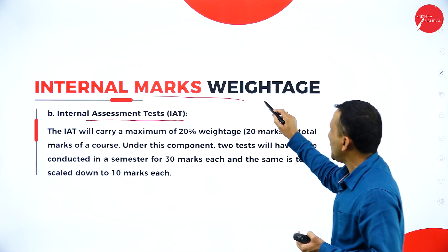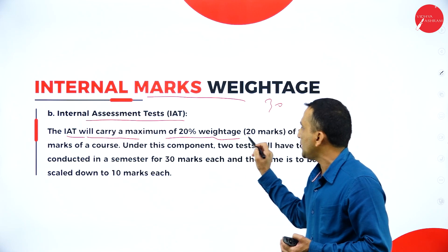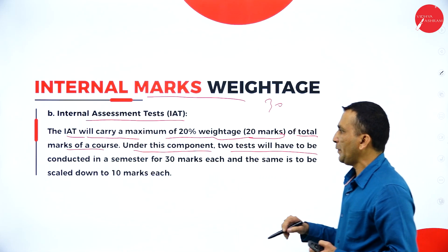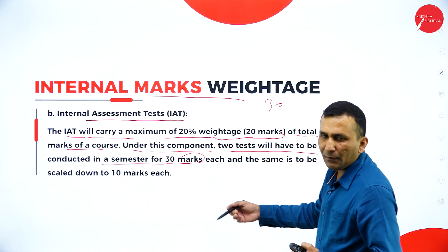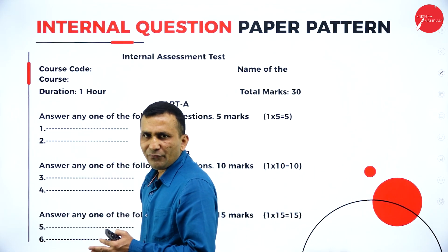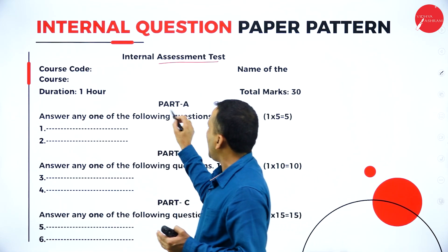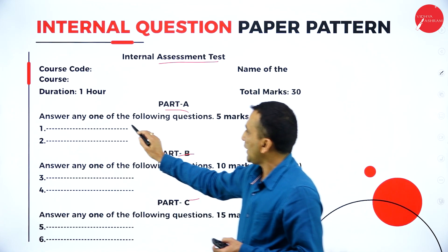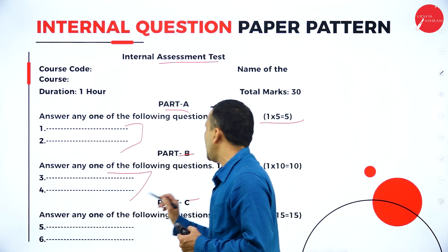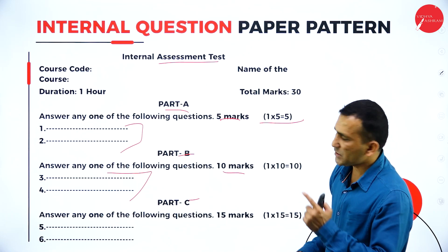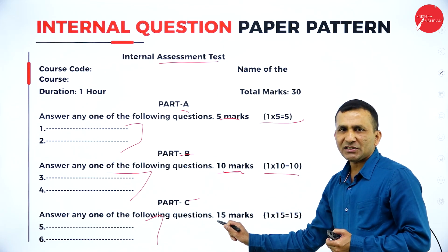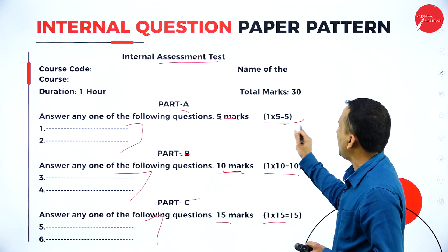For the Internal Assessment Test, the question paper pattern is as follows: Part A — two questions, attempt any one, each carrying 5 marks (5 marks total); Part B — two questions, attempt any one, each carrying 10 marks (10 marks total); Part C — two questions, attempt any one, each carrying 15 marks (15 marks total). Total: 5 + 10 + 15 = 30 marks, scaled down to 10.